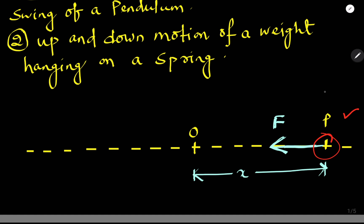Let us consider a particle at point P of mass M executing SHM. The equilibrium position is O, the particle is at point P, and the distance OP is a small displacement x — that is the distance between the equilibrium position O and the particle at P.